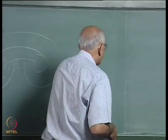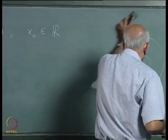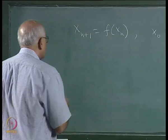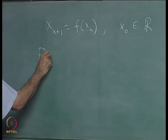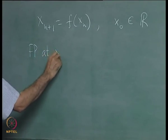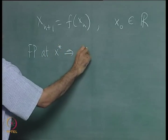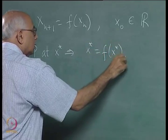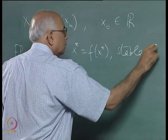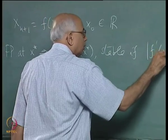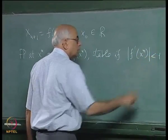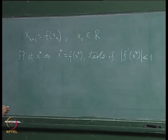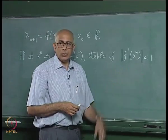Now let us look at these maps in greater detail. A fixed point x* of such a map satisfies x* = f(x*). It is stable if |f'(x*)| < 1, unstable if |f'(x*)| > 1, and marginally stable if |f'(x*)| = 1 exactly.